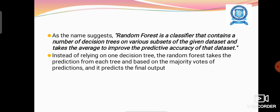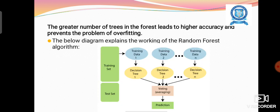Instead of relying on one decision tree, the Random Forest takes the prediction from each tree and, based on the majority votes of predictions, it predicts the final output. The greater number of trees in the forest leads to higher accuracy and prevents the problem of overfitting.